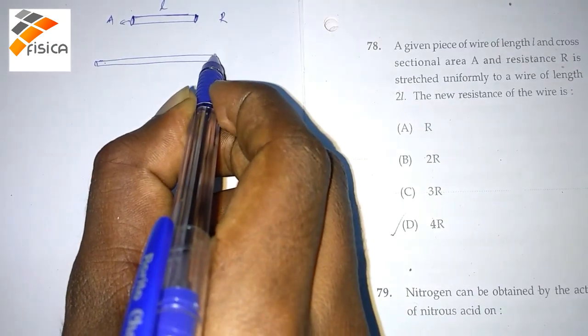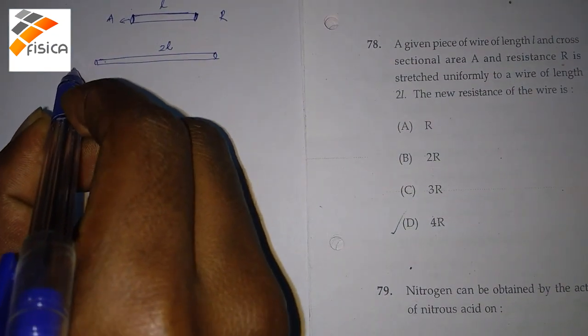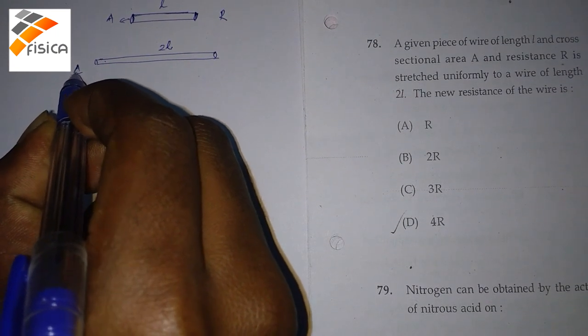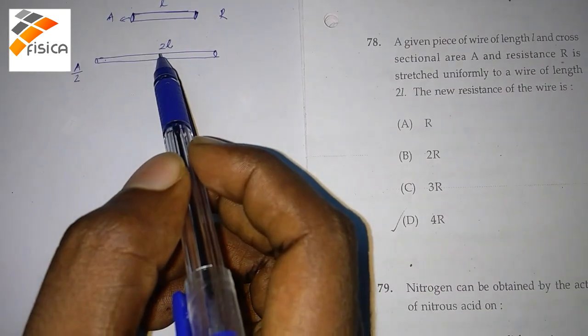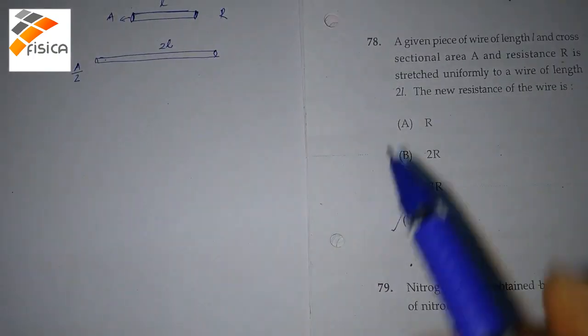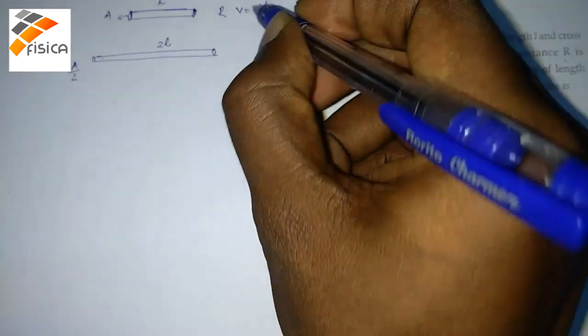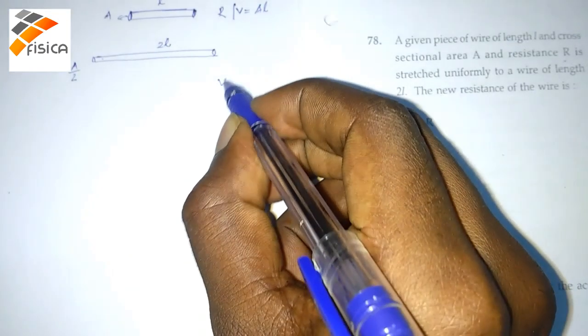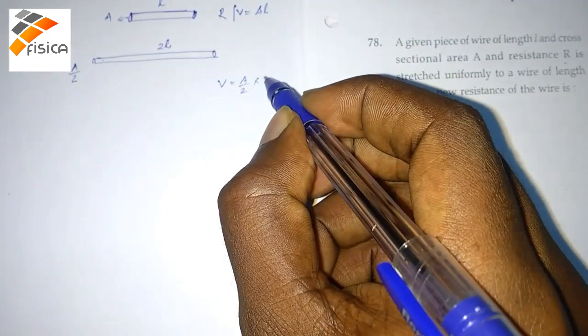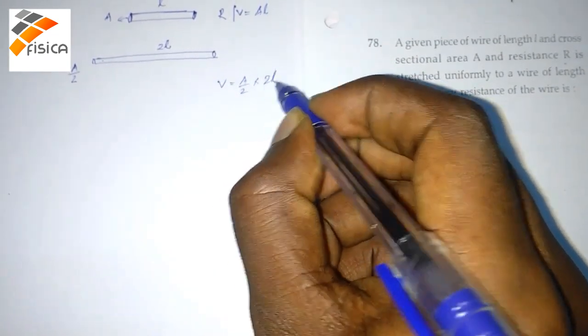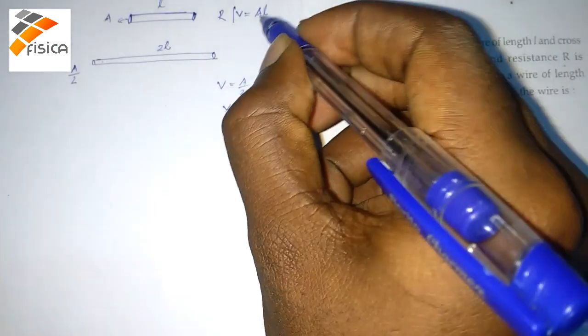Now the length of the wire is 2L. And the area of cross-section will reduce to A by 2. The reason is the volume is conserved in both cases. So here the volume is equal to area into length. Here, the volume is equal to area, that is A by 2 into length of the wire, that is 2L. So 2, 2 cancels and volume V is equal to AL. So volume is preserved.